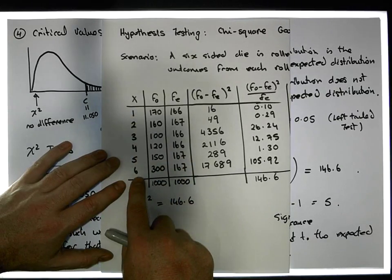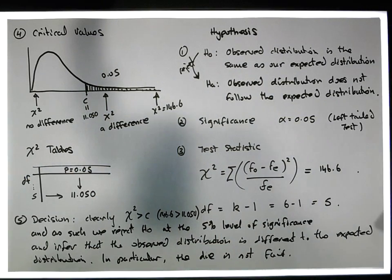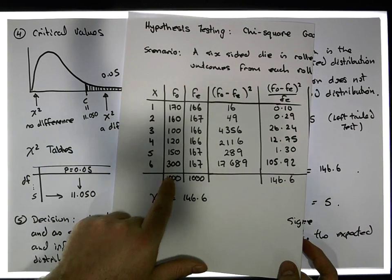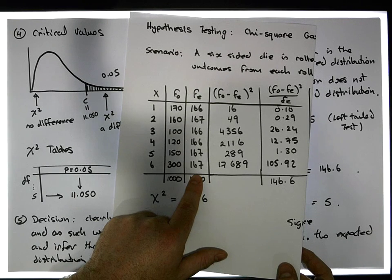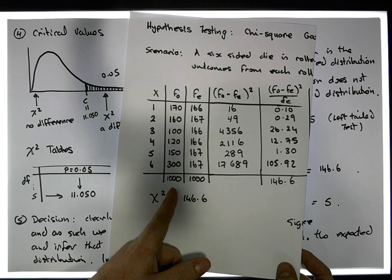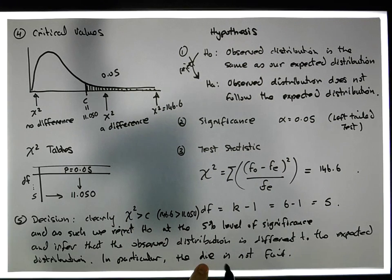So what we're really saying here is that what we've observed seems to be different to what we'd expect. Now what we expect is a fair die, so what we've observed must be not a fair die. In which case, it is not a fair die.